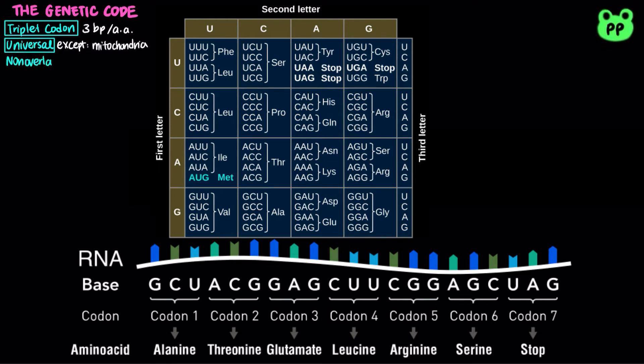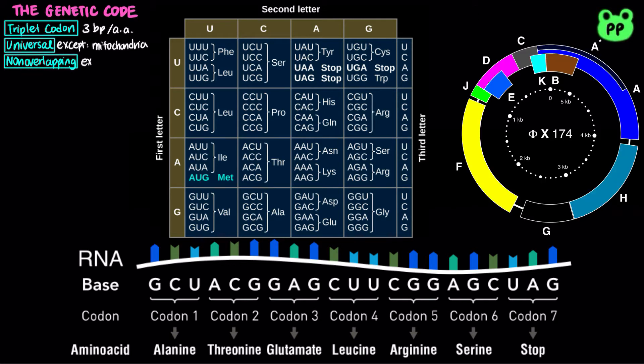The genetic code is non-overlapping, meaning that codons don't share nucleotides, except in bacteriophage ΦX174, which has a highly overlapping genetic code.